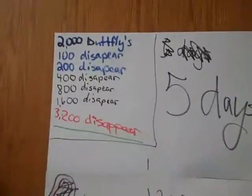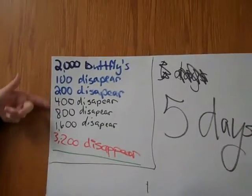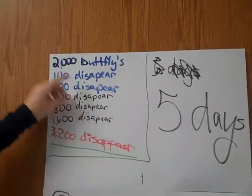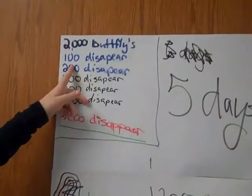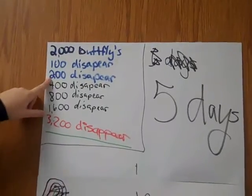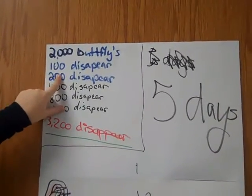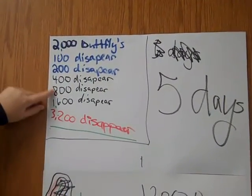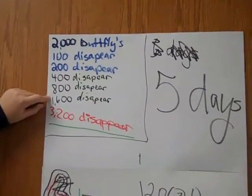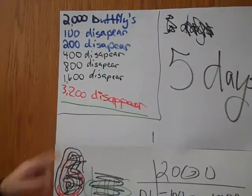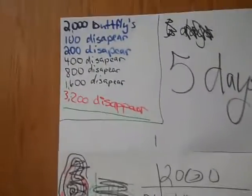So basically what we did, first we tracked down what the numbers should be. There were 2,000 butterflies to start, and then the first day 100 disappeared. It says to double the amount, so 100 times 2 would be 200. Then 200 times 2 would be 400. 400 times 2 would be 800. Then 800 times 2 would be 1,600. Then 1,600 times 2 would be 3,200. And those are how many disappear each day.